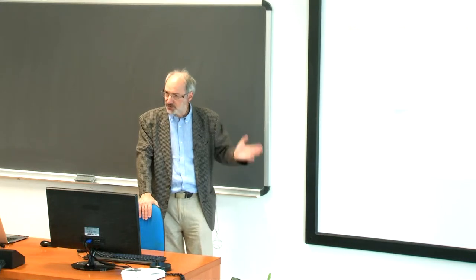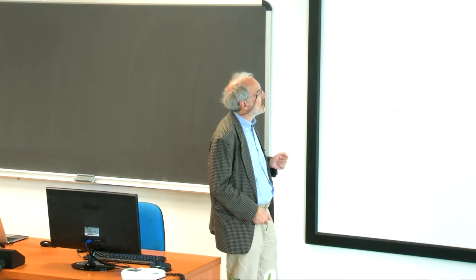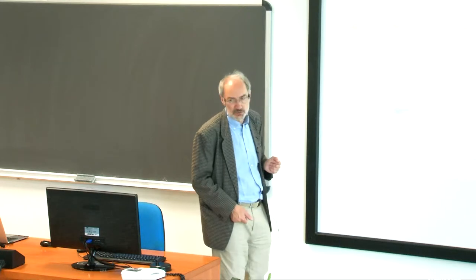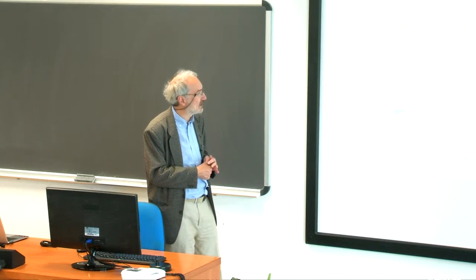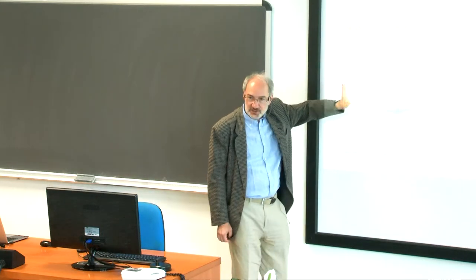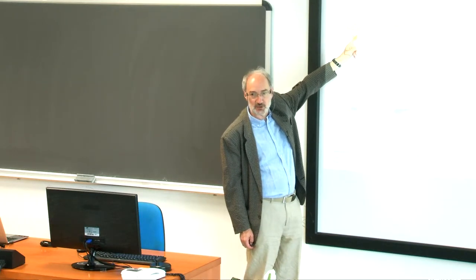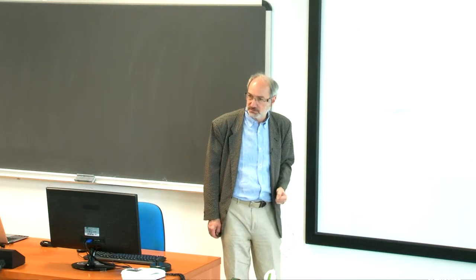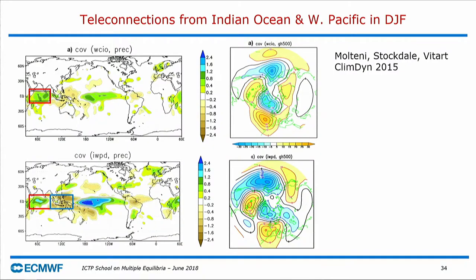We chose three areas and computed an index of the rainfall anomaly, then looked at the covariance of this index with geopotential height. These were seasonal means because we were concerned with seasonal forecast — data for DJF over the period 1981 to 2011. If you average the precipitation in the Western and Central Indian Ocean and compute the covariance with geopotential height in the Northern Hemisphere, you get, again, this wave number 2. So observationally, there is clearly a connection between the Indian Ocean and this wave number 2 pattern.